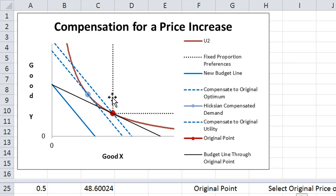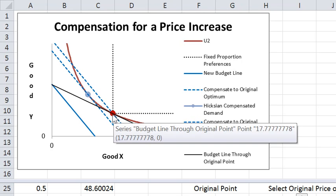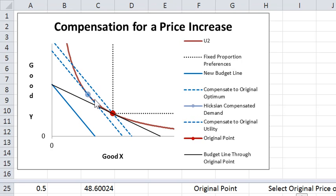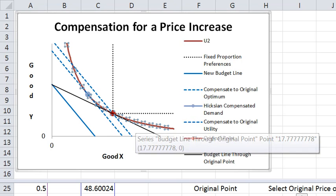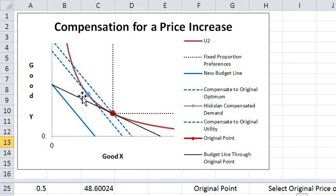If the consumer had these right angle fixed proportion indifference curves to compensate, you would compensate back to the original bundle. But if you have these smooth indifference curves like this one, which is probably more realistic, at least over a period of time...